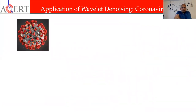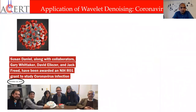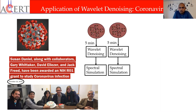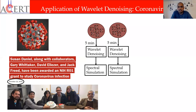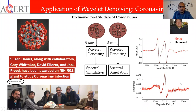Regarding coronavirus — I don't think we need an introduction. Freed and collaborators started working on coronavirus in 2018, and luckily ACERT is now open studying it. They use a fast-scanning technique where data is collected for five minutes, then denoised, followed by spectral simulation, since there's no time for longer collection. This is another application of denoising. The COVID-19 CW ESR spectrum is pretty lively data — it shows a lot of motion. More data from both pulse dipolar and CW ESR from Freed's group is coming.